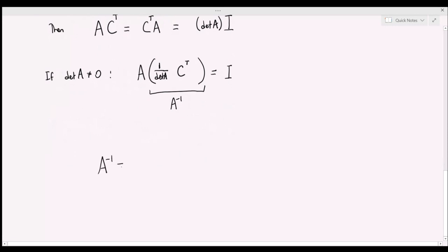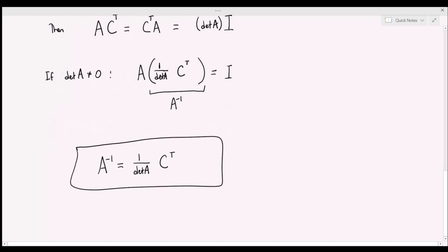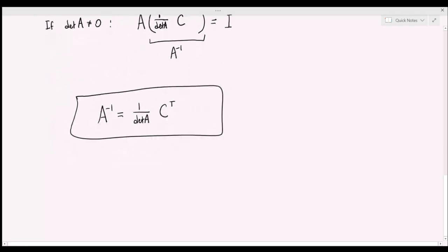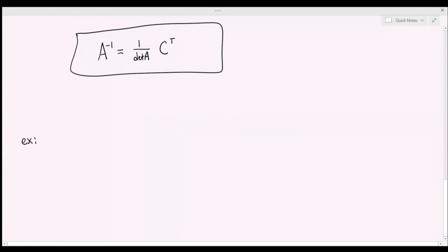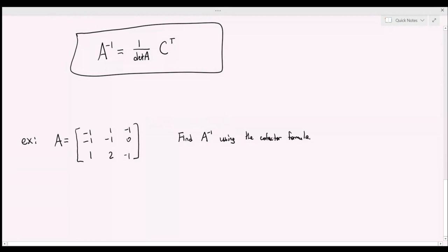So if the determinant of A is nonzero, we can divide each part of this equation by the determinant of A to get that A times one over det(A) times C transpose equals the identity matrix. Since A times this matrix equals the identity, that tells us this must be the inverse of A. So A inverse equals one over the determinant of A times the transpose of the cofactor matrix.